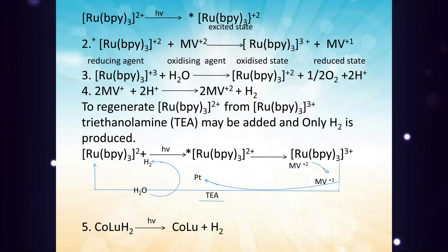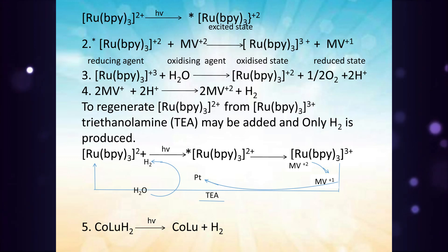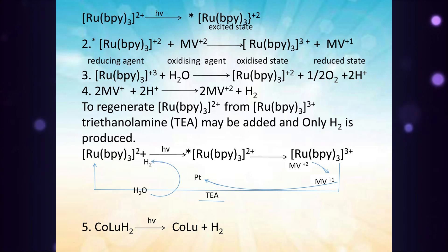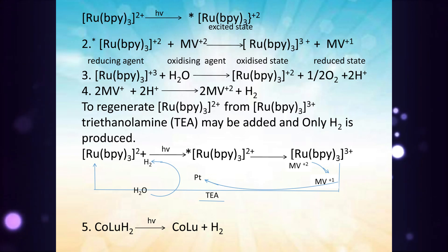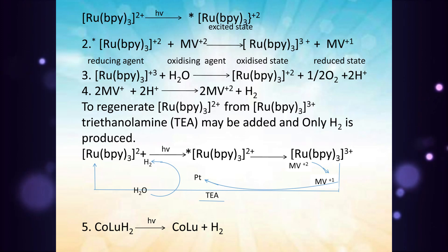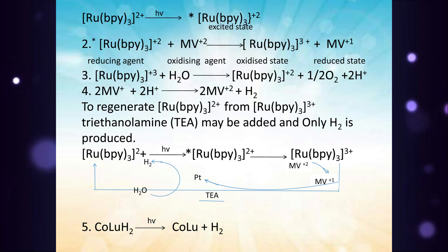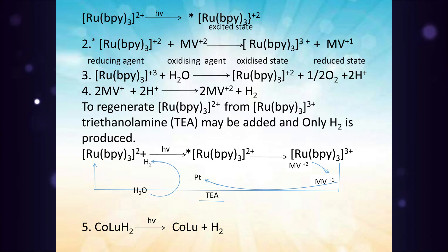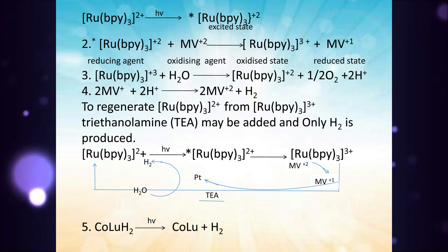To regenerate tris-bipyridine-ruthenium(II) cation from tris-bipyridine-ruthenium(III) cation, triethanolamine may be added and only H2 is produced. This is a schematic representation of photochemical generation of H2 from water by using the tris-bipyridine-ruthenium(II) cation complex.